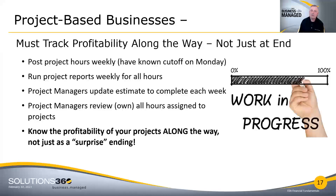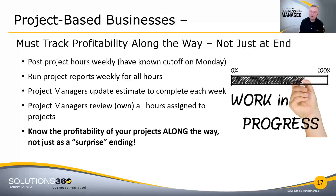We have to do tracking along the way. Finding out you lost the game because you didn't keep score until after the game is over is a poor way to play. We have to track profitability along the way, not just at the end. Simple guidelines: post project hours weekly with a known cutoff — all hours against a project must be recorded by Monday. Run project reports so that every week in your job performance meeting, you're looking at actual hours spent against that project. Project managers must update the estimate to complete, and must review and own all the hours. If random people are charging hours to a project, you can't hold project managers accountable for profitability.